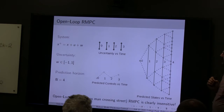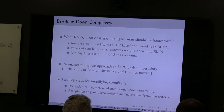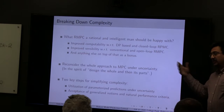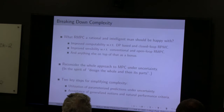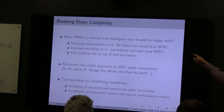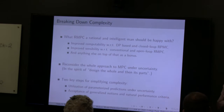We need to break down this complexity. The question is: what robust MPC should a rational and intelligent designer use? Because answering this is somewhat personal, from here on these are my opinions. The first desideratum: something with improved tractability with respect to dynamic programming and closed-loop robust MPC. The second: something with improved conservativeness with respect to open-loop and conventional robust MPC. Anything on top of that is a bonus.